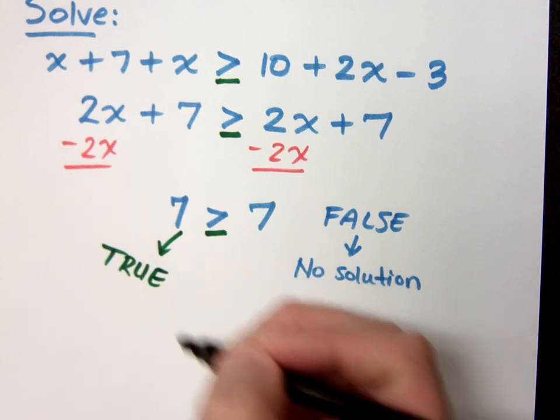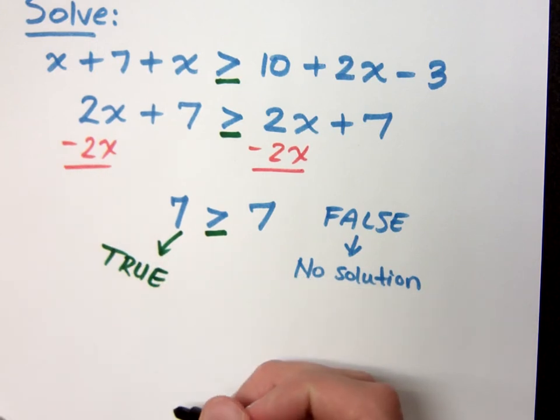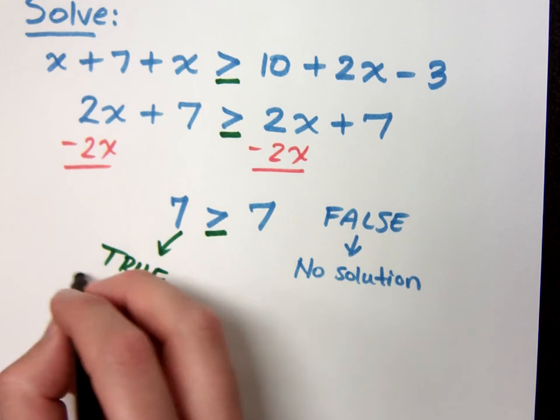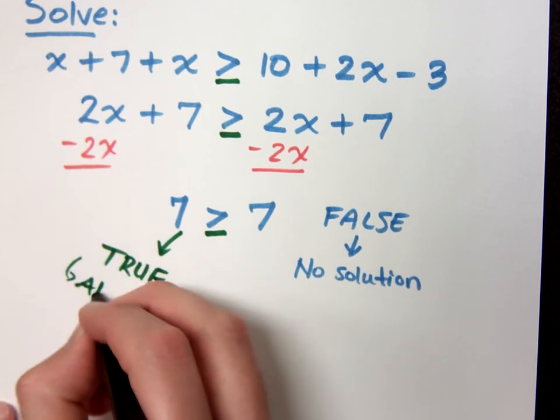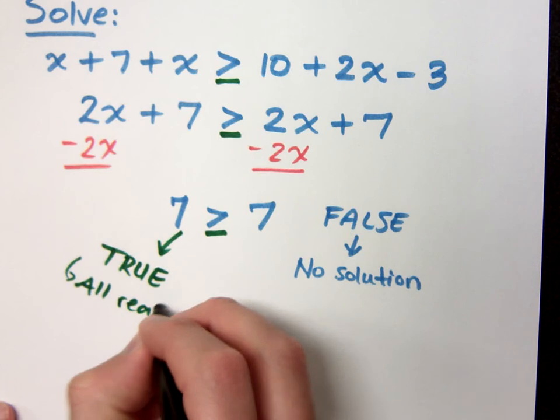Yes. Yes. 7 is always greater than or equal to 7. And so what this tells me is that my response here would be all real numbers.